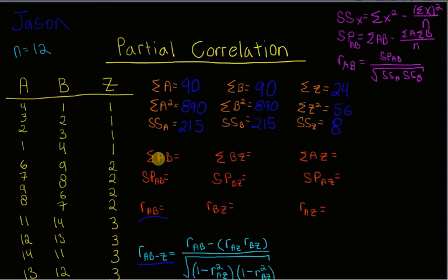Here we have the sum of A times B. So you're going to multiply the A value by its corresponding B value, and then you're going to add them up for each one. So 4 times 1 plus 3 times 2 plus 2 times 3 plus 1 times 4, and so on and so forth. For that we're going to end up with 860. Doing the same between variables B and Z, we will get 220. And then doing the same between variables A and Z, we'll get also 220.